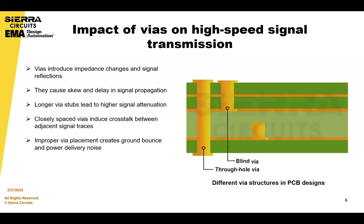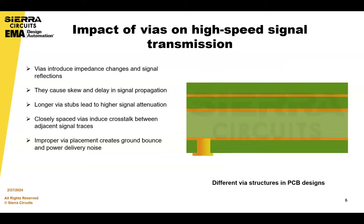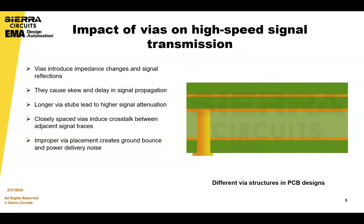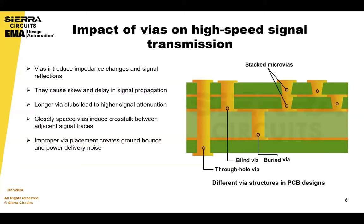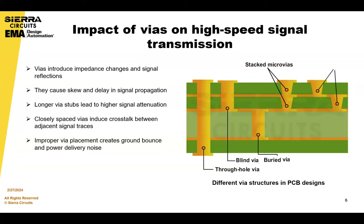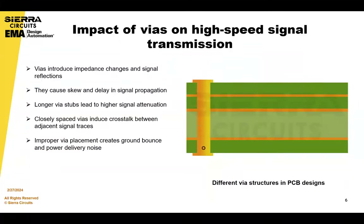VIAs play a critical role in high-speed signal transmission. Here are some of the ways they influence signal integrity. VIAs can introduce impedance changes along the signal path. One layman's example: if you have pipes in your house and the pipes keep changing sizes, you're going to have very irregular water flow — that's an analogy for the discontinuities you would have.